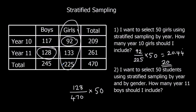That gives 13.617. I can't have 13.6, so the nearest whole number is 14.